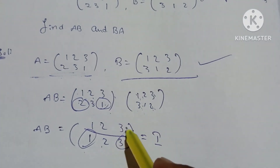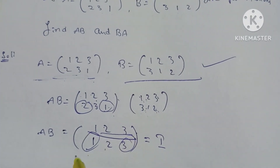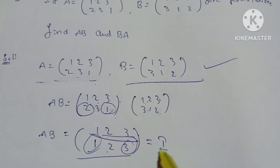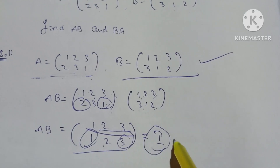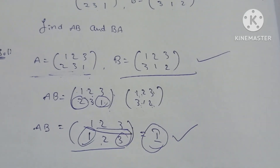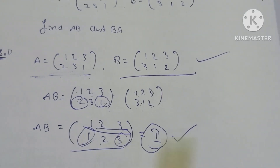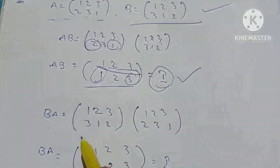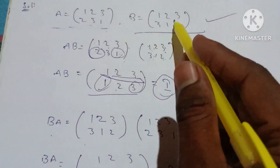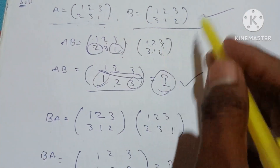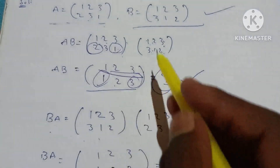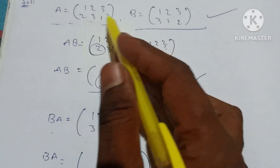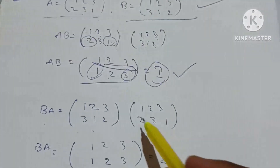So if a value is equal to 1, then we know values 1, 2, 3, 2, 3, 1. Here we go. B is equal to b value first: 1, 2, 3, 3, 1, 2. So this value is 1, 2, 3, 2, 3, 1.